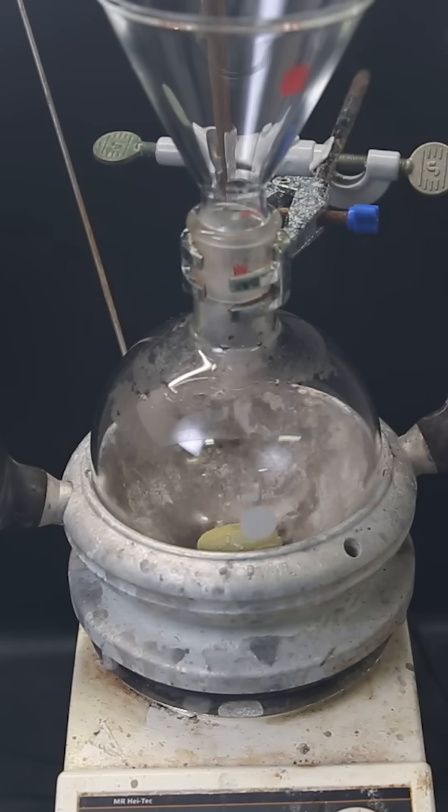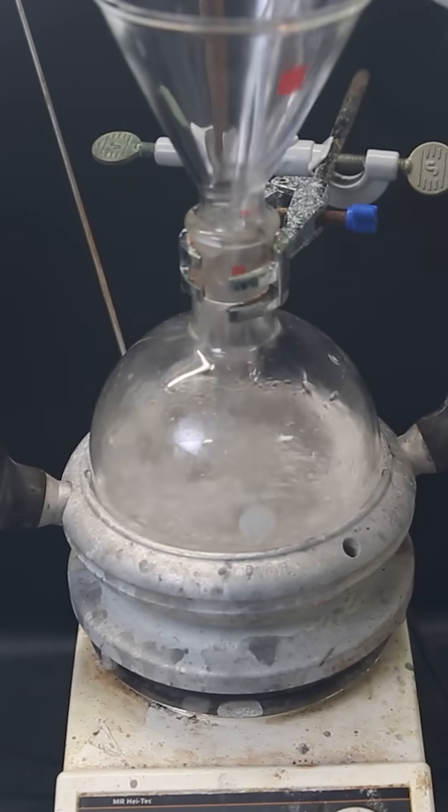After that, it turned cloudy. I then set up a flask again and add in a bunch of potassium hydroxide and pour all of the carbon tetrachloride on top.